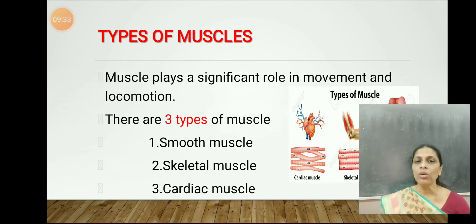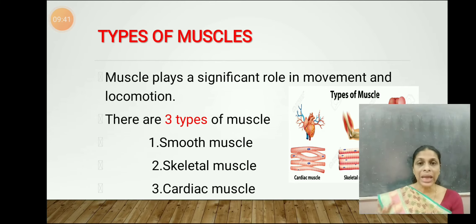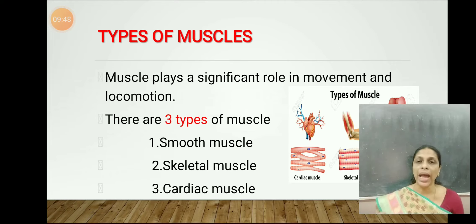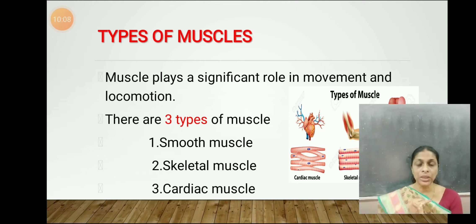Muscles play an important role in movement and locomotion, as muscles attached to the bones help in locomotion. There are three types of muscles: the first one is smooth muscle, the second one is skeletal muscle, and the third one is cardiac muscle.